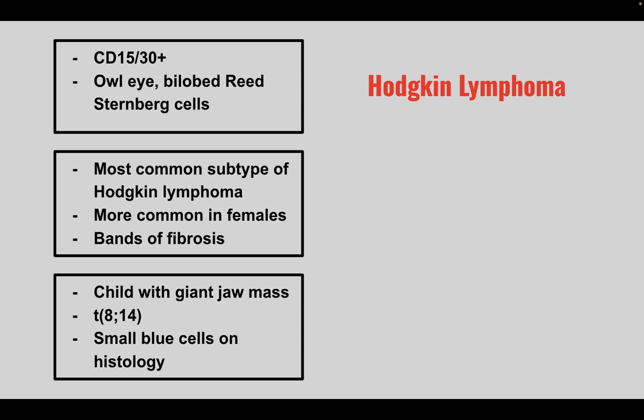Next is the most common subtype of Hodgkin's lymphoma. It's more common in females and there are bands of fibrosis. This is nodular sclerosis.